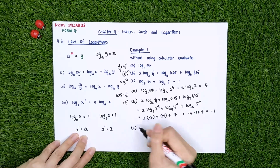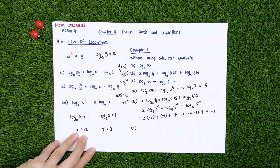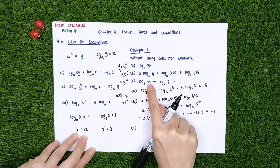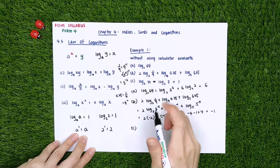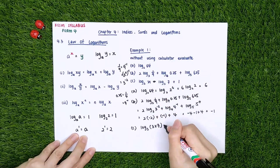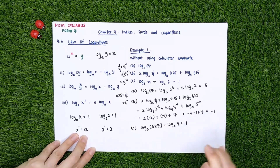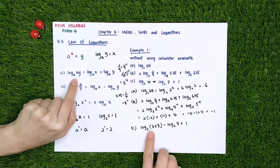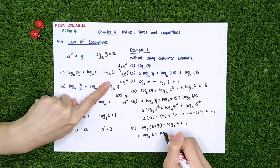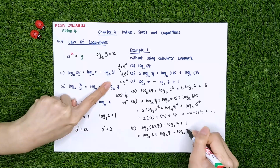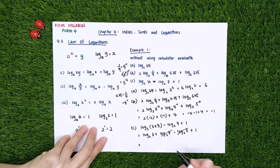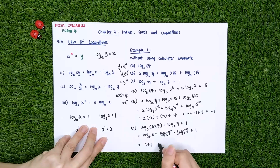Part C: log_3(21) - log_3(7) + 1. Note: this is minus 1, not plus 1. Change 21 to 3 times 7. Applying the first law of logarithm, split it: log_3(3) + log_3(7) - log_3(7) + 1. The log_3(7) terms cancel. log_3(3) equals 1, so 1 + 1 equals 2.